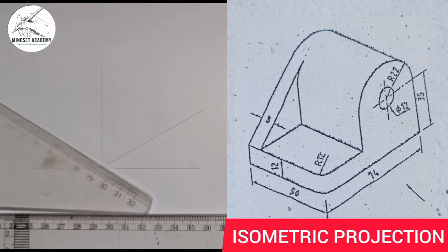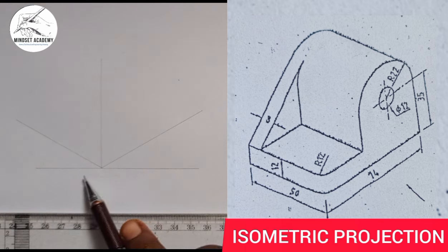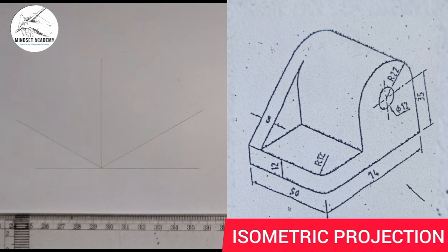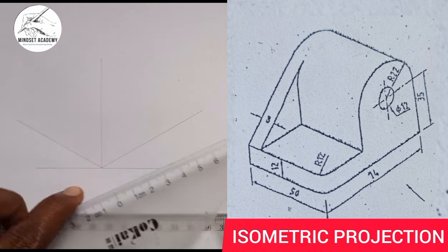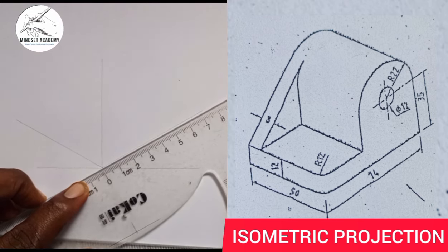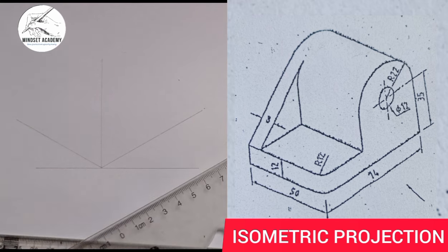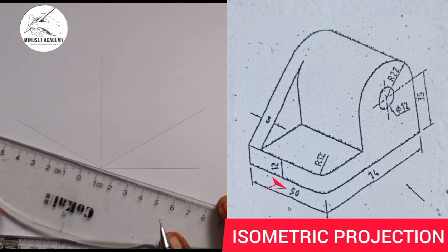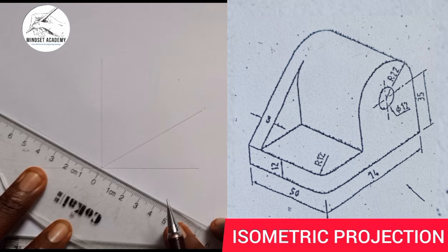Now the next thing you do after drawing the axes is to draw your entire length, width, and height. The entire length here is given as 74, so I am going to measure 74 from this point of reference — from 0 to 74. The width is given as 50, so from here I will measure 50, from 0 to 50.